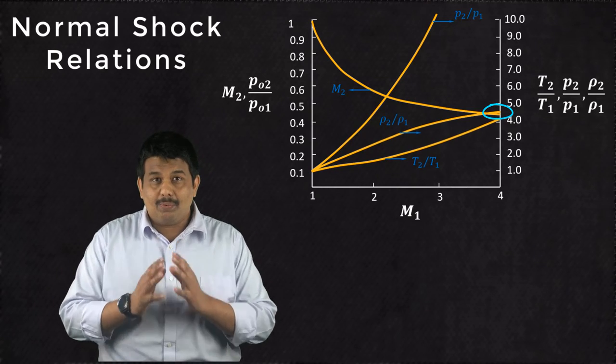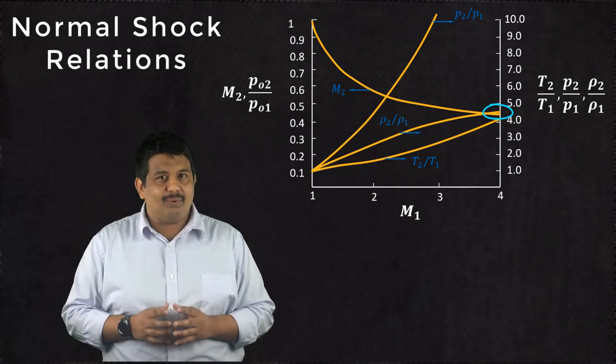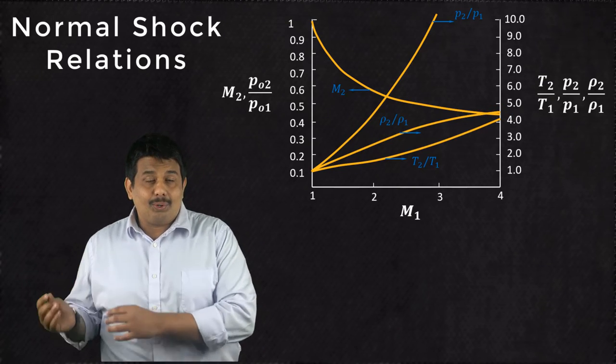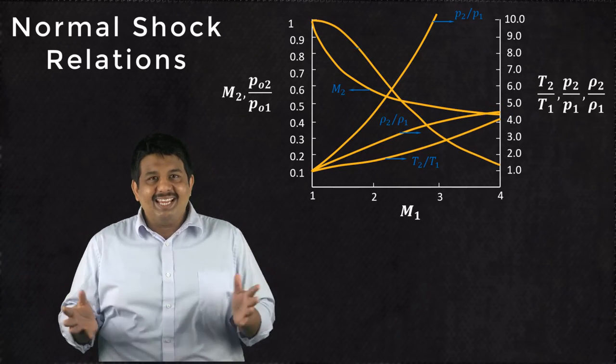The density ratio, however, approaches a finite value. The ratio of total pressure decreases with increasing M1.